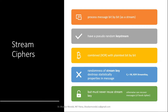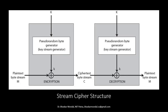Looking at the Stream Cipher architecture: on the sender side, there is a plaintext byte stream — taking one byte at a time — and an 8-bit key stream byte coming from a pseudo-random generator. We perform XOR on one byte of the message with one byte of the small K (the key stream), and we get the cipher C as output.